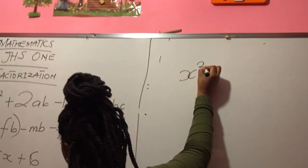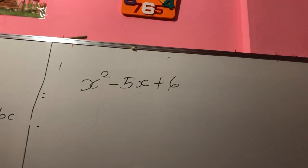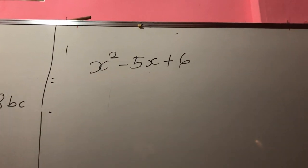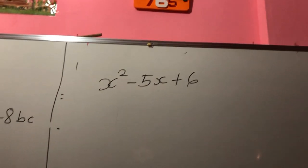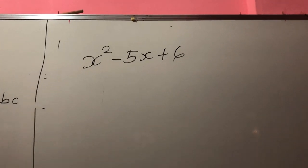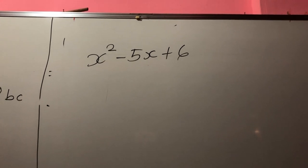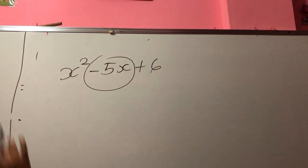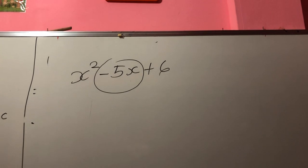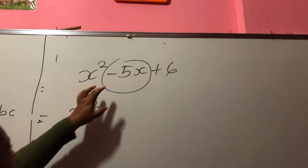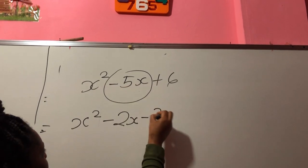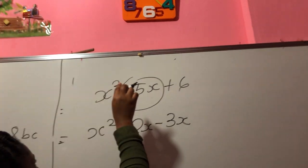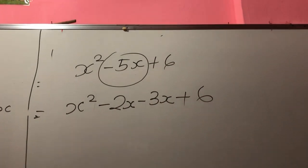The next question is: X squared minus 5x plus 6. Now you might ask yourself how it's going to work because you only have three terms, not four. Simple — we can get two numbers out of this, making our question four variables. Look here: what two terms will give you minus 5x? It is minus 2x and minus 3x. These two together will give us minus 5x. Then you bring your final number, which is 6.